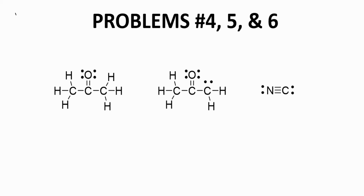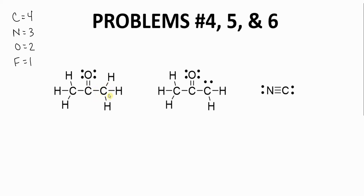For the next questions, let's put in the upper left our expected number of bonds for each second row element. Now we have our first structure on this slide. Here is a carbon with 1, 2, 3, 4 bonds — it has a full octet and no formal charge. This carbon connected to the oxygen also has 4 bonds, including a double bond — that's what we expect, so no formal charge. The rightmost carbon also has 4 bonds, no formal charge. The oxygen has 2 bonds both to carbon, plus 2 lone pairs — a full octet. Two bonds is what we expect, so that oxygen does not have a formal charge. There are no formal charges in this structure on the left.